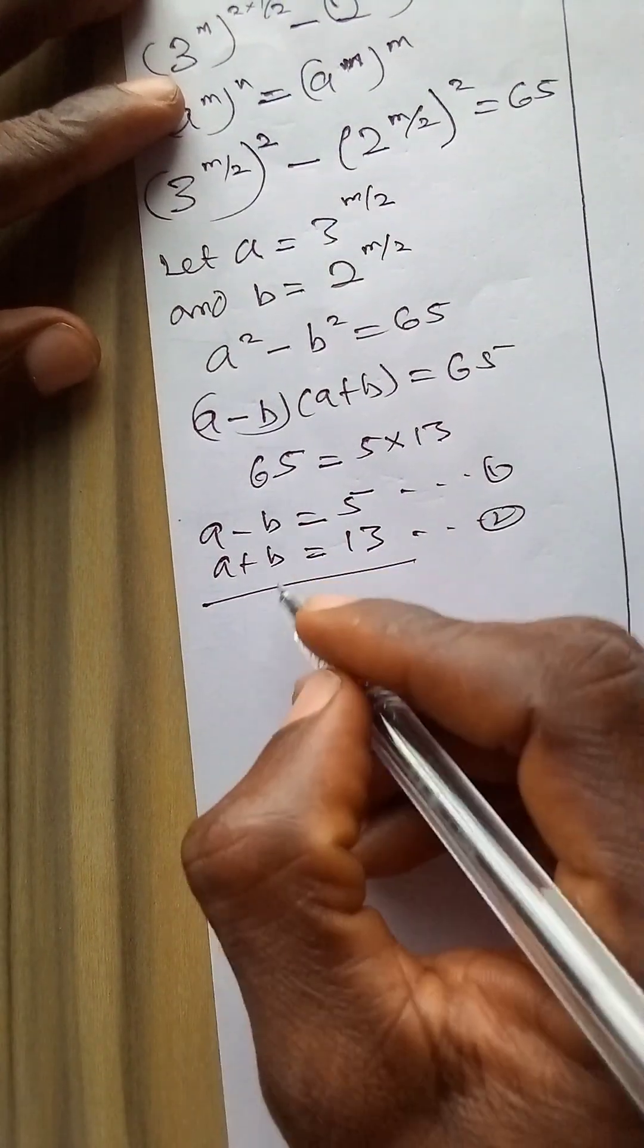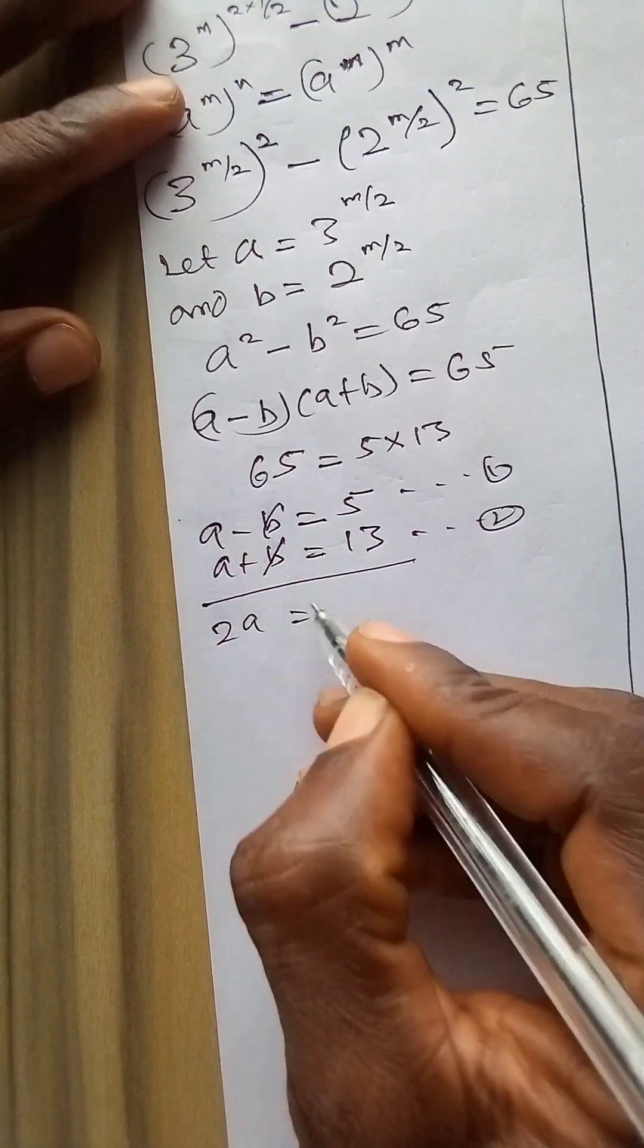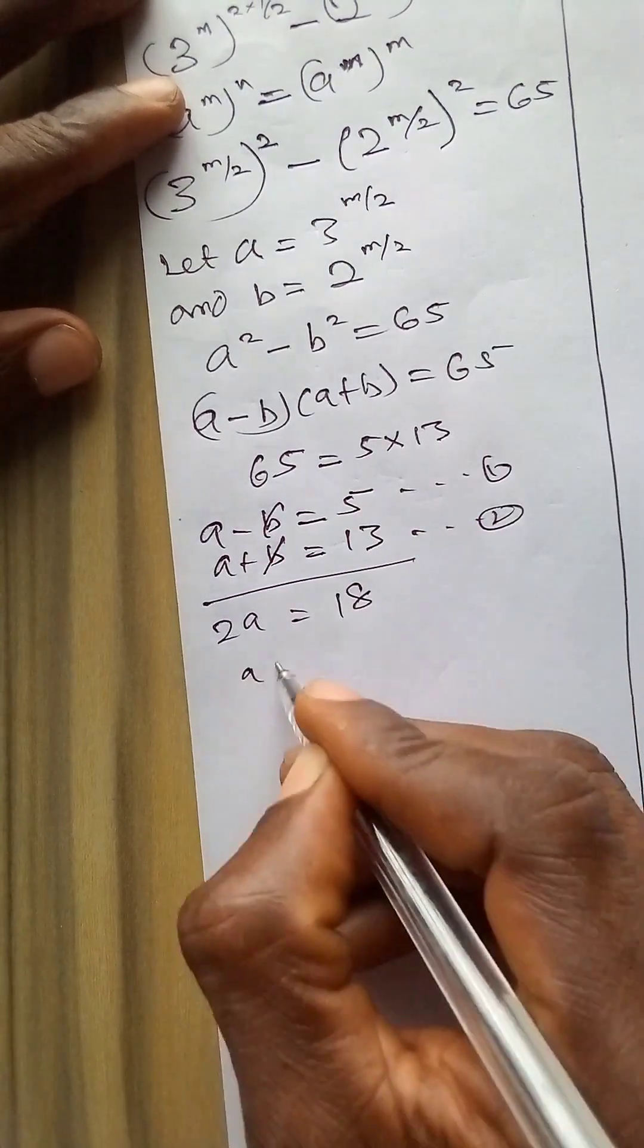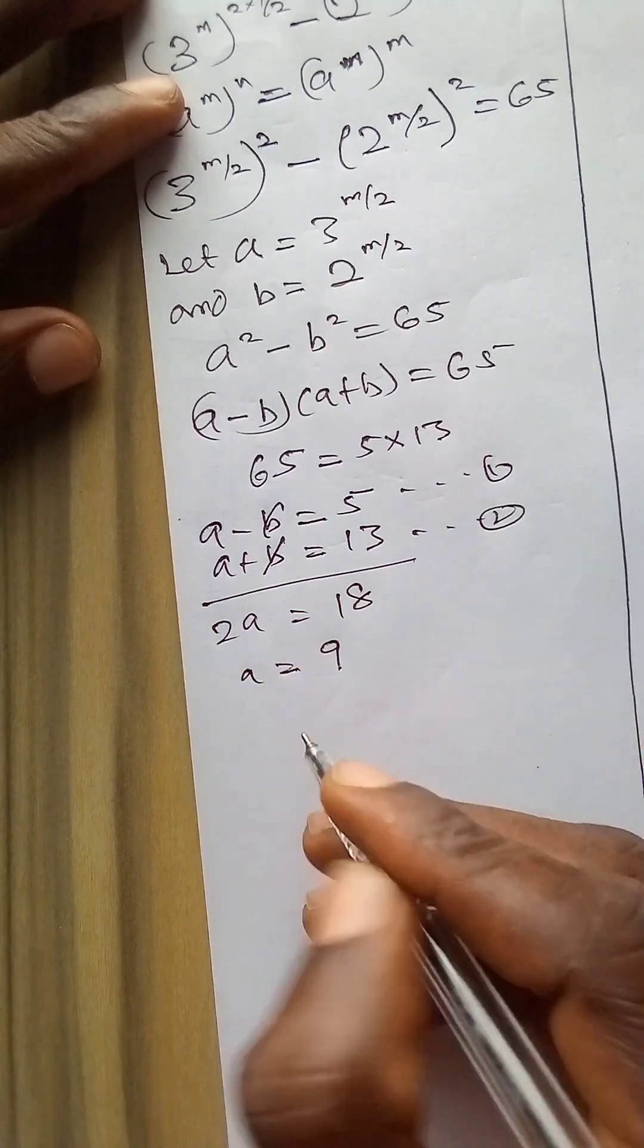I will add the two equations. So this will cancel this. a plus a is 2a, and 5 plus 13 is 18. So a equals 9 because 18 divided by 2 is 9.